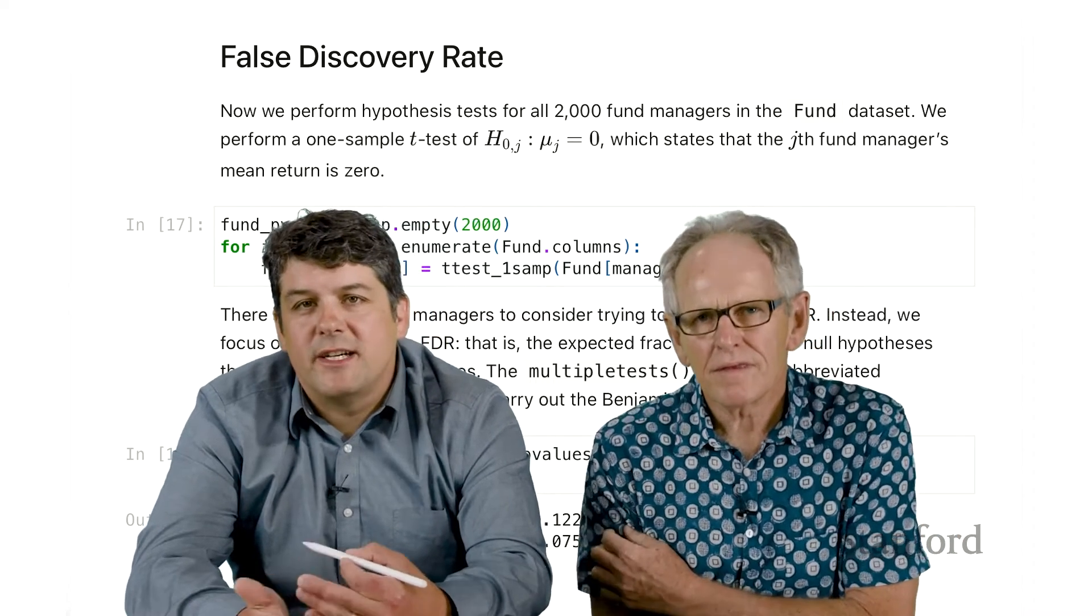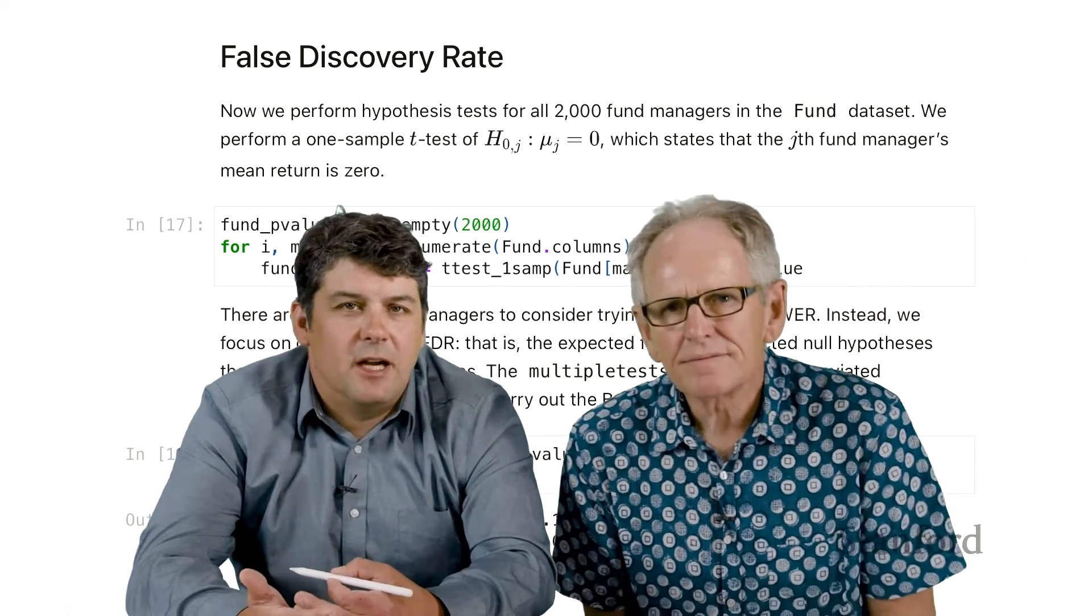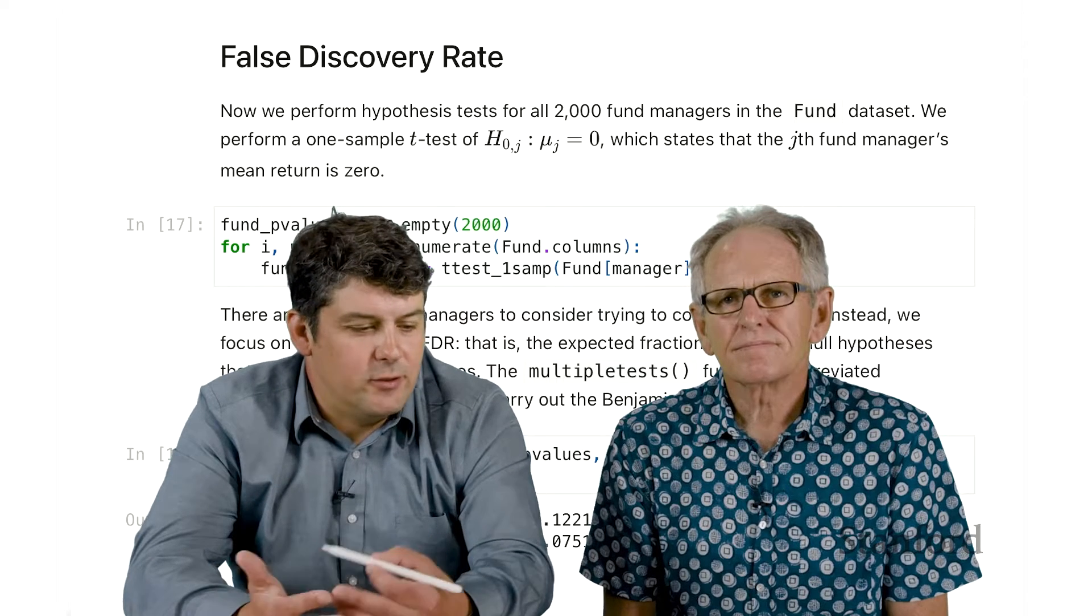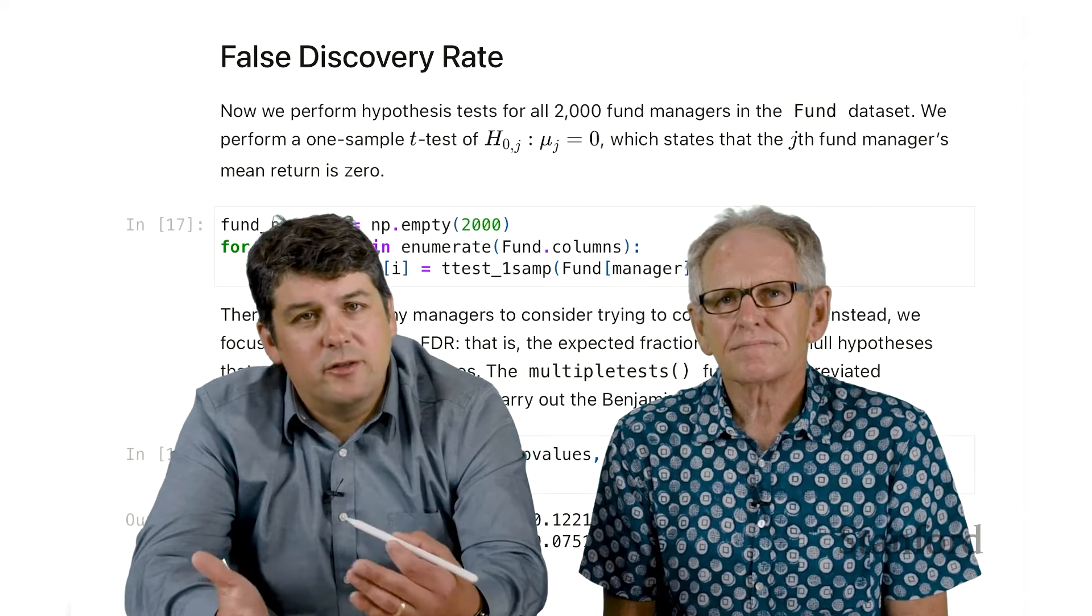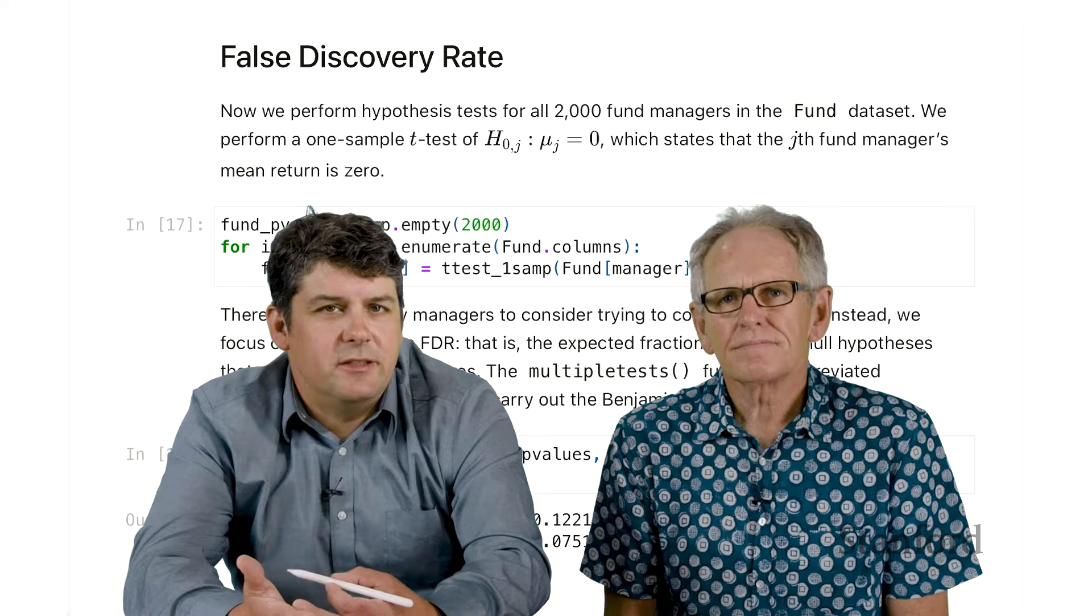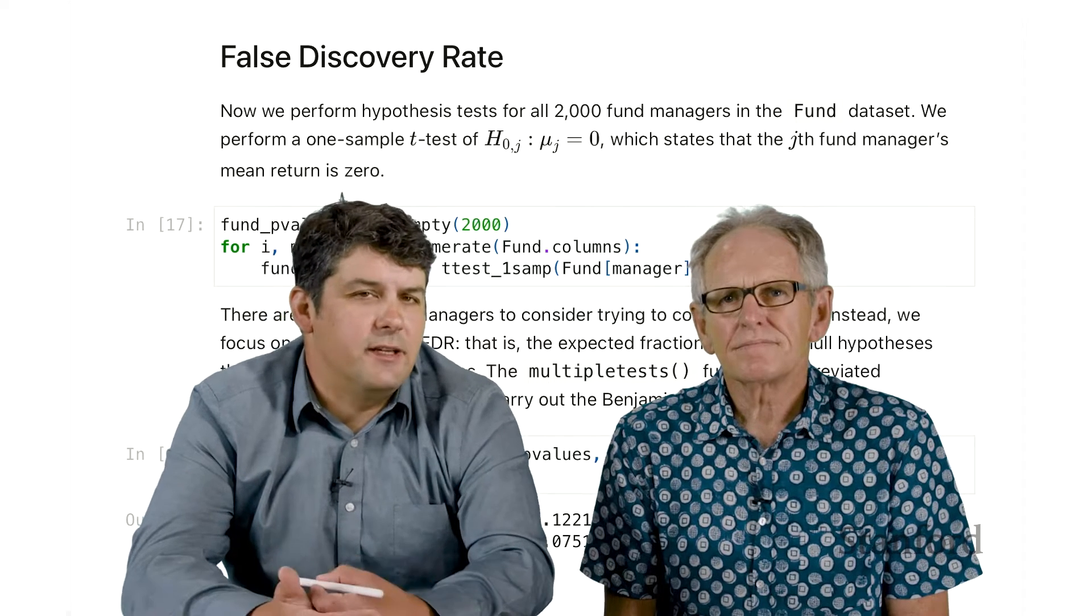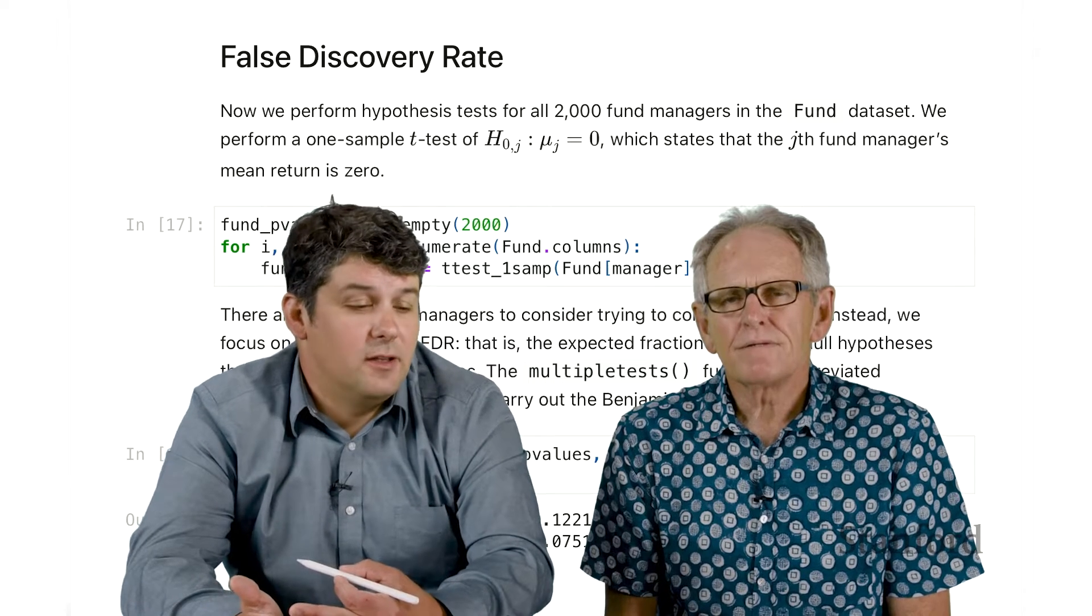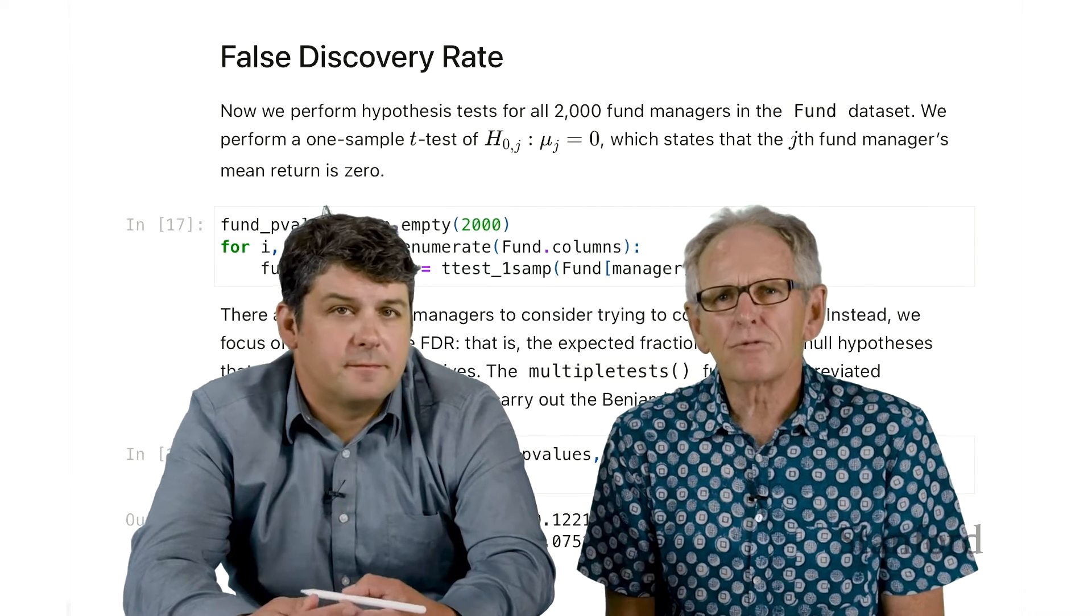If we reject 100 hypotheses, we can expect, if we control the false discovery rate around 20%, that about 20 of those 100 are likely to be truly null, that we didn't actually make a discovery. But on the other hand, we would have made maybe 80 out of 100 true discoveries. In many situations, this is much more useful.